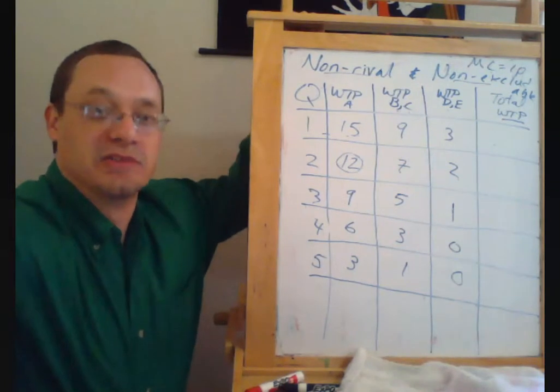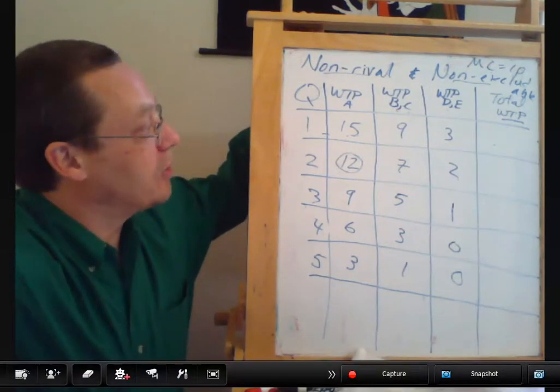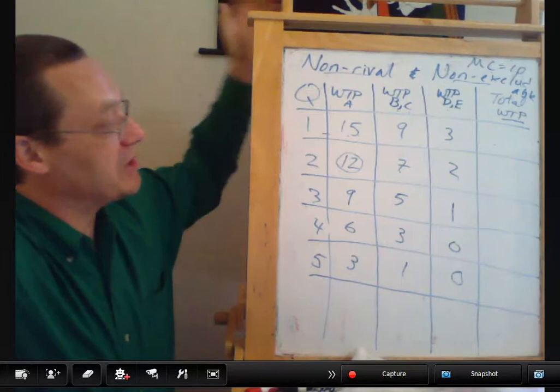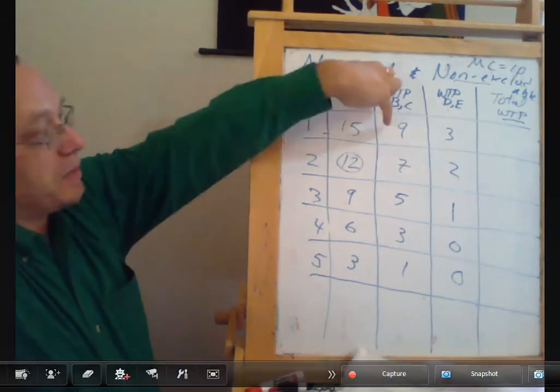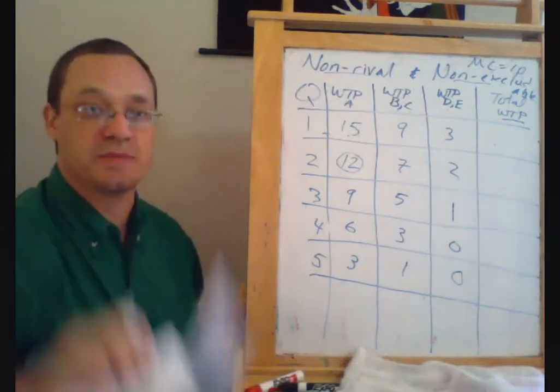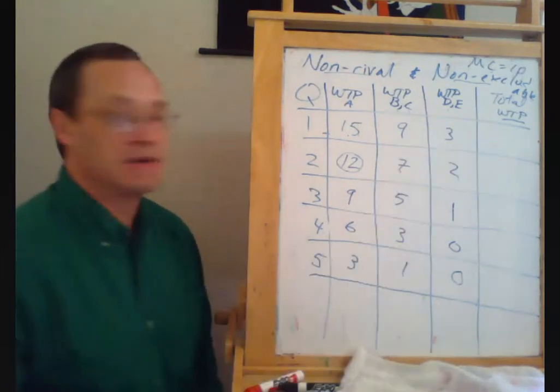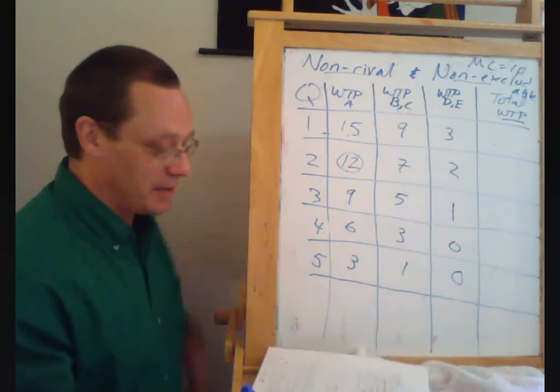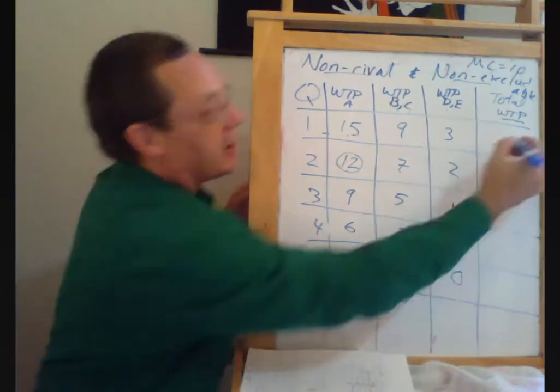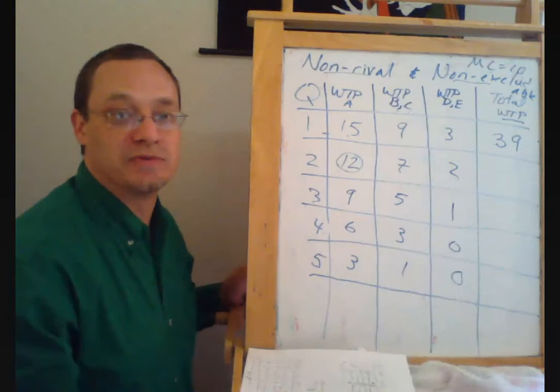So the total willingness to pay for the first street light is $15 plus two times $9, because we have two people who value it at nine, plus two times $3, and that gets us up to $39 of value for that street light.